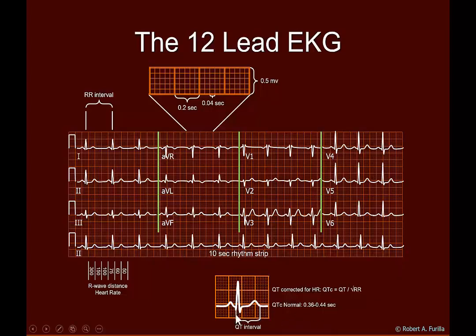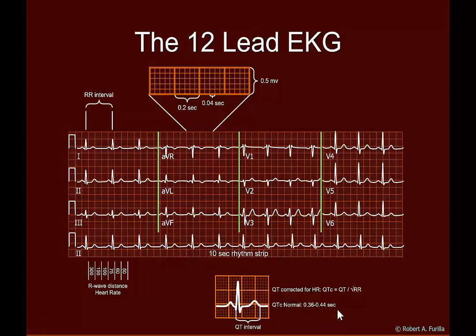The other thing we want to look at is the QT interval — from the Q wave to the end of the T wave. The QT interval changes with heart rate, so we need to correct it. We take the QT interval and divide it by the square root of the RR interval to get the corrected QT. If the RR interval is one second, the QT corrected equals the QT — we're correcting back to 60 beats per minute. A corrected QT of about 0.36 to 0.44 seconds, less than 450 milliseconds, is normal. Long QT intervals can lead to ventricular tachycardia or torsades de pointes.